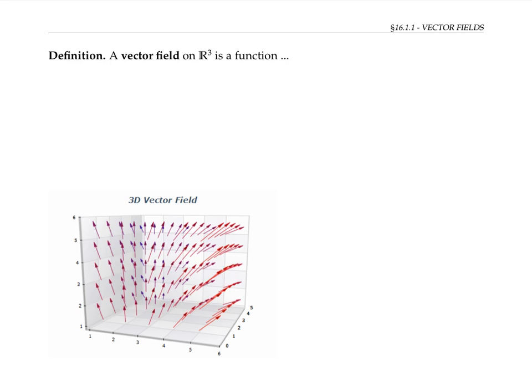Similarly, a vector field on R three is a function that takes R three to R three, or it could be a function that takes some set D to R three, where D is a subset of R three. Once again, we can think of the vector field on R three as a collection of vectors or arrows, one for each point of the domain.